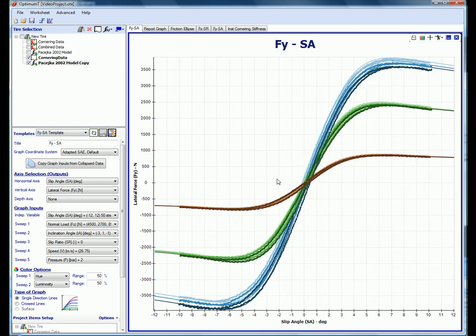In Optimum T, you can overlay as many model and data sets as you wish. This is useful when verifying the quality of model fits, as well as when comparing different tire constructions.